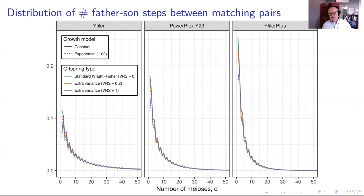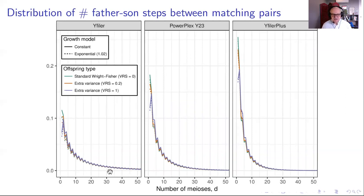It's also interesting to look at how distant the relationship is between Q and the alternative contributor X. For the high mutation rate Y filer plus, there's hardly ever more than 30 father-son steps separating matching pairs of individuals. Greater than 30 does exist with lower mutation rate profiles but is still getting pretty rare. This again illustrates that all matching individuals are somewhat related — not just known relatives like cousins and uncles, but going further than that, they're still much more closely related than random pairs of individuals in the population. We just can't think of them as being completely unrelated individuals.